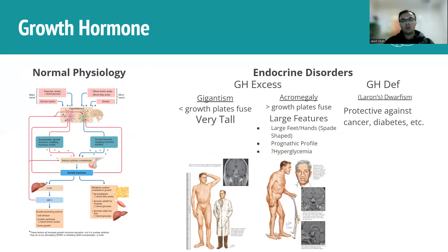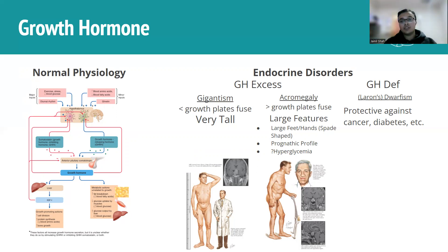Acromegaly occurs when growth hormone excess presents after growth plate fusion. Rather than bones growing taller, features just grow bigger — hands and feet become larger, described by the buzzword 'spade-shaped.' You also get growth in facial structures, such as the nose and brow, giving a prognathic profile. There's also hyperglycemia, because growth hormone decreases glucose uptake by muscles and increases glucose output by the liver.